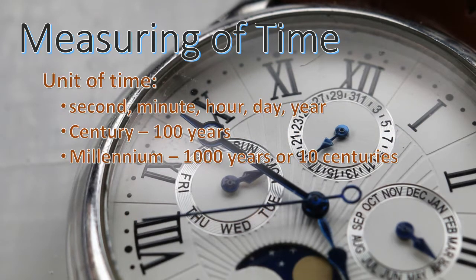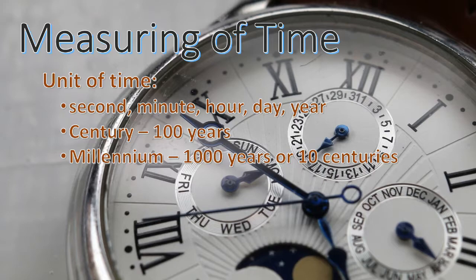The most basic unit of time is the second, and we also have the millisecond, minute, hour, day, and year. We also have the century, which equals 100 years, and a millennium, which equals 1,000 years or 10 centuries.